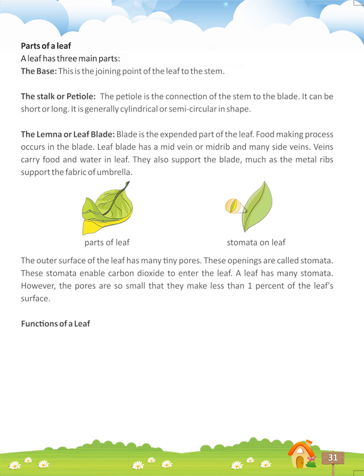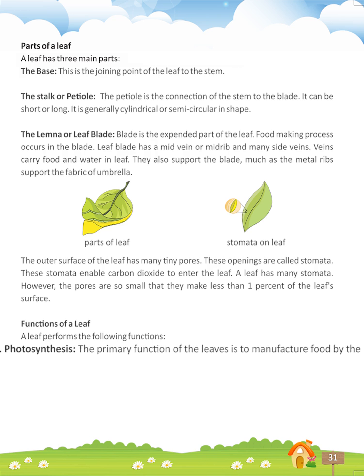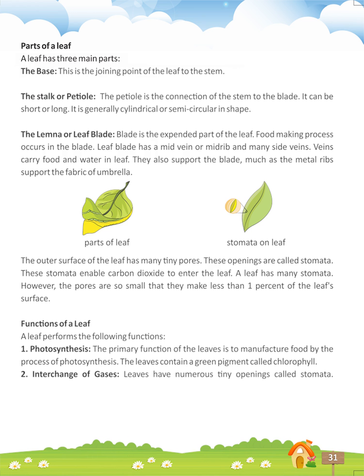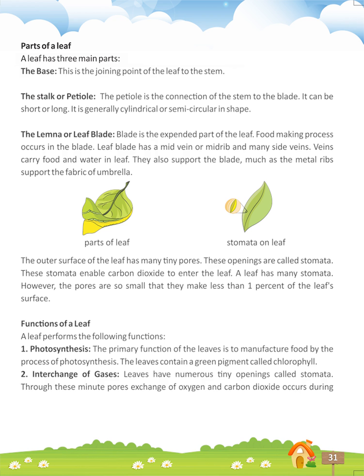Functions of a leaf. A leaf performs the following functions. 1. Photosynthesis — the primary function of the leaves is to manufacture food by the process of photosynthesis. The leaves contain a green pigment called chlorophyll. 2. Interchange of gases — leaves have numerous tiny openings called stomata. Through these minute pores, exchange of oxygen and carbon dioxide occurs during photosynthesis and respiration.